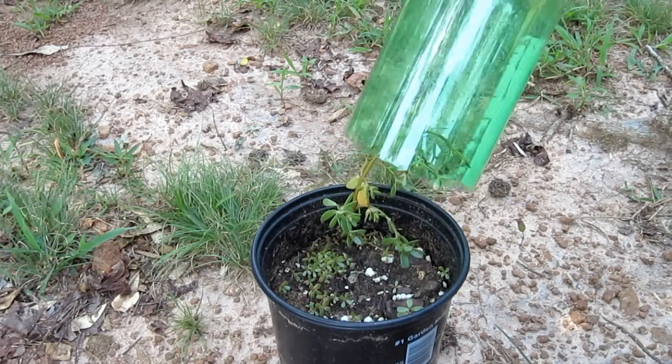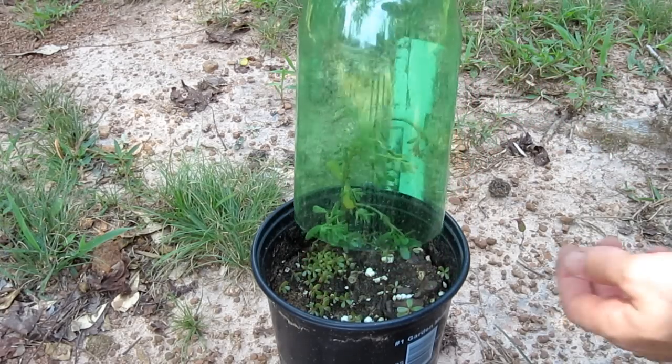Number 7. Cut the bottom off a bottle and place it over a small plant to create a mini greenhouse.